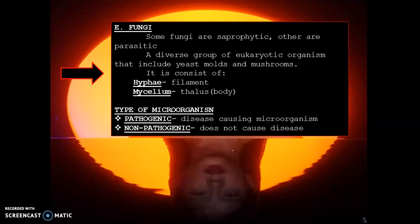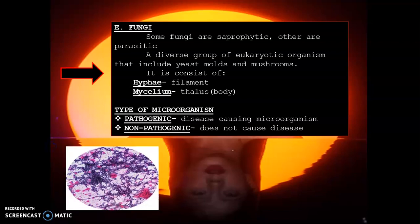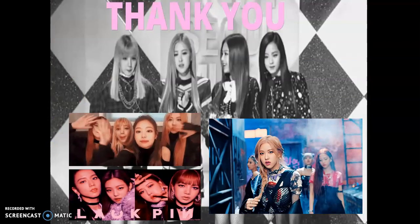The last category of microorganism is fungi. Fungi are saprophytic; others are parasitic. They are a diverse group of eukaryotic organisms that include yeasts, molds, and mushrooms. They consist of two divisions: hyphae, which are filaments, and the thallus, which is the body. The types of microorganism are either pathogenic — meaning the microorganism causes disease — or non-pathogenic, meaning the microorganism does not cause disease at all.